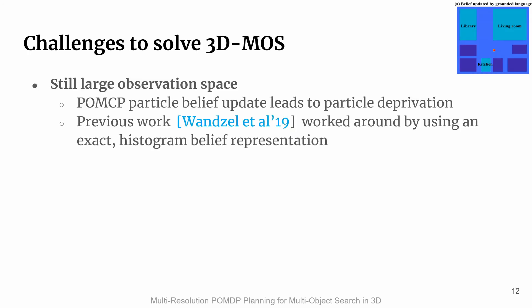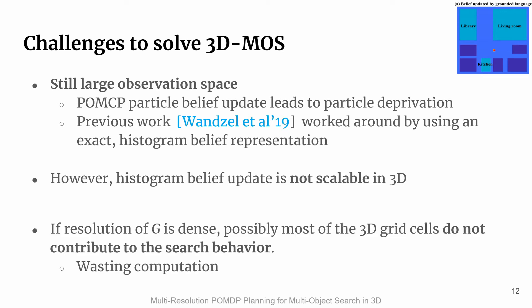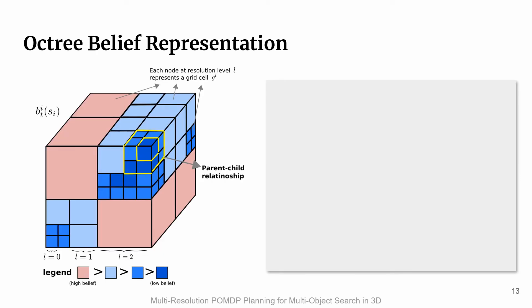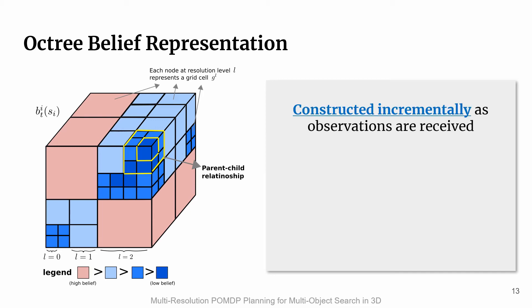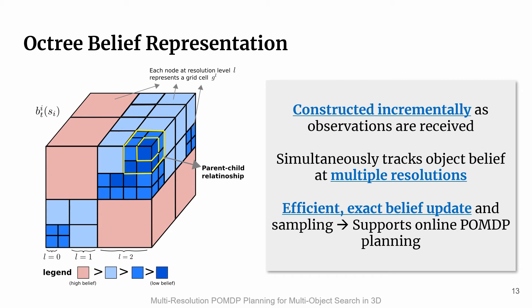Despite the use of a per-voxel observation model, the observation space is still large for practical POMDP planning. In this situation, POMDP fails due to particle deprivation. Previous work worked around this by maintaining exact histogram belief representation. However, this representation is not scalable in 3D, and if the resolution of the search space G is dense, possibly most of the 3D grid cells do not contribute to the search behavior, which wastes computation. To overcome those challenges, we propose a novel belief representation called AugTree belief. It can be constructed incrementally as observations are received. It simultaneously tracks object belief at multiple resolution levels and affords efficient exact belief update and sampling, supporting online POMDP planning.